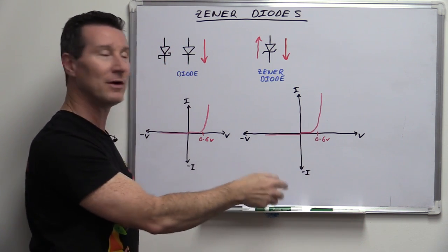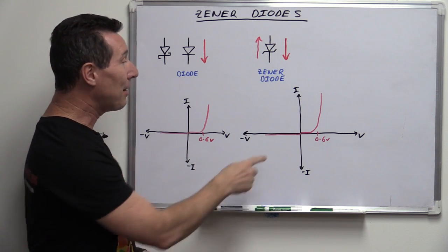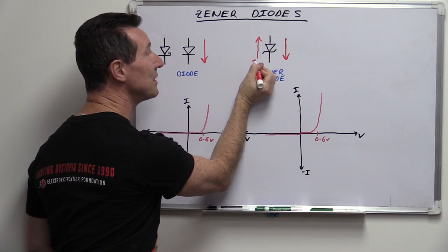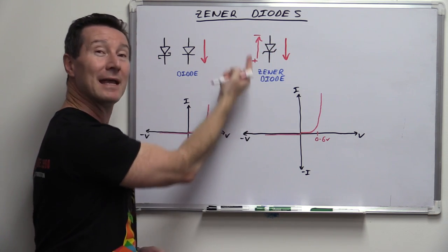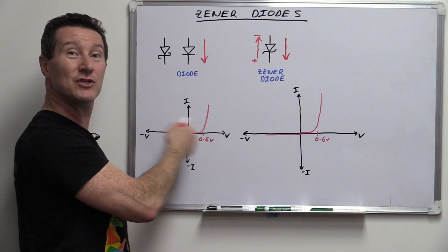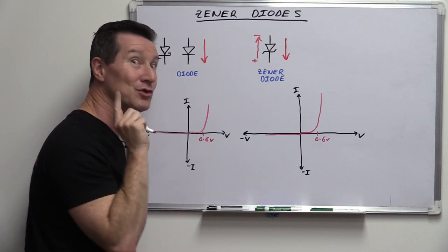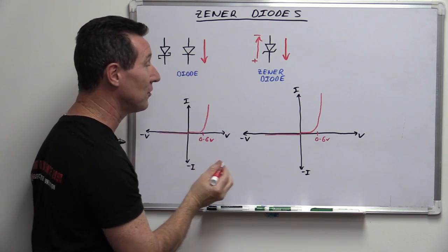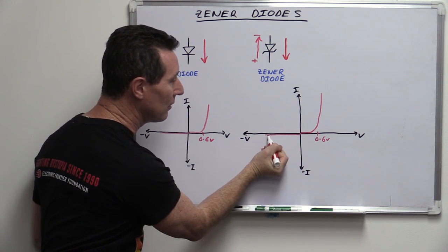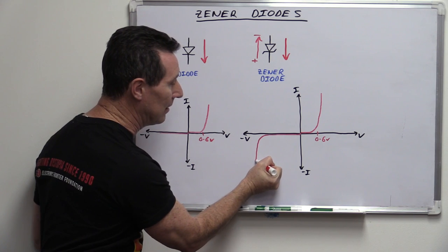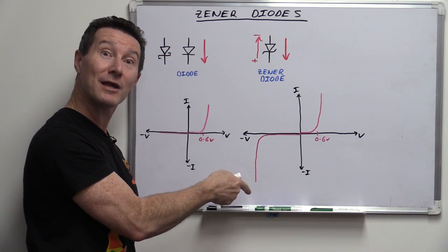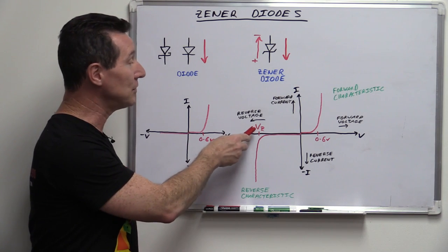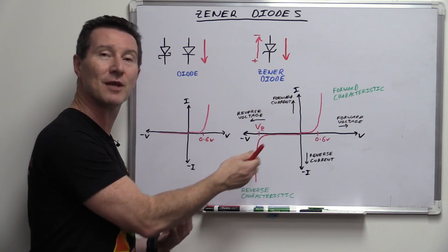The knee starts at about 0.6 volts and it starts to conduct current. But in the negative direction, when you try and put a negative voltage on — the positive here and the negative here — and try to make current flow in reverse, a regular diode just won't conduct anything. But a Zener diode, when you reverse bias it, will do nothing for a while, and then it'll actually start conducting like a diode in the opposite direction. The voltage at which it does that is called the Zener voltage, VZ — or the Zener knee voltage.